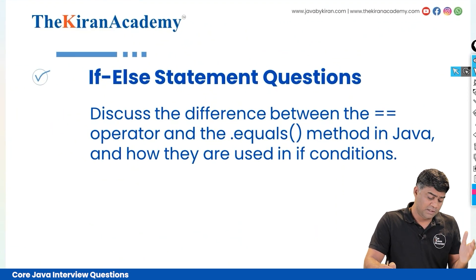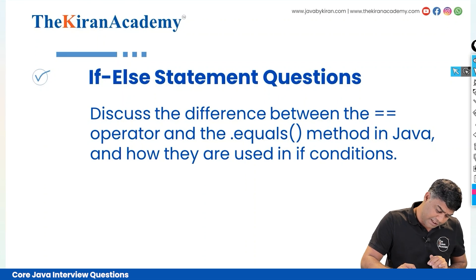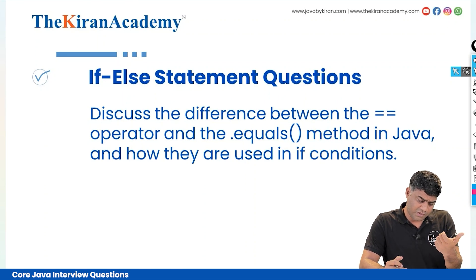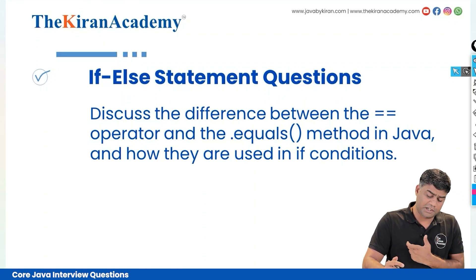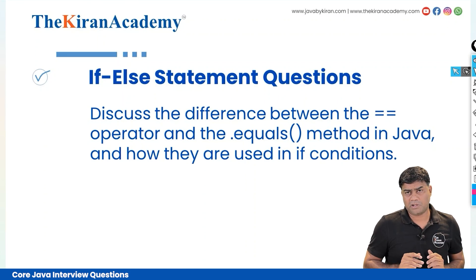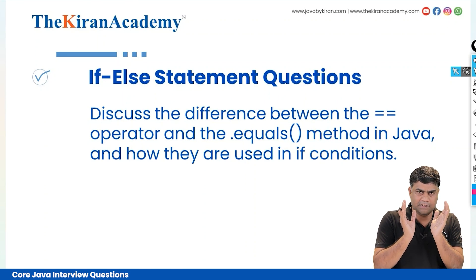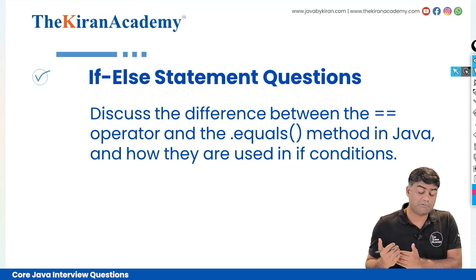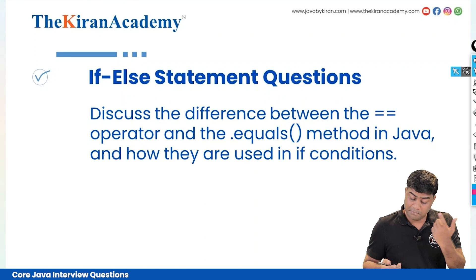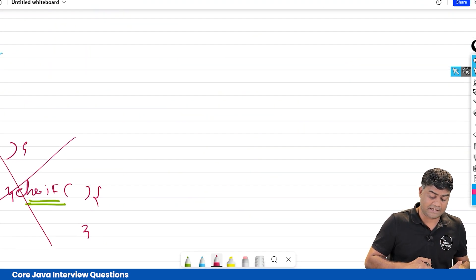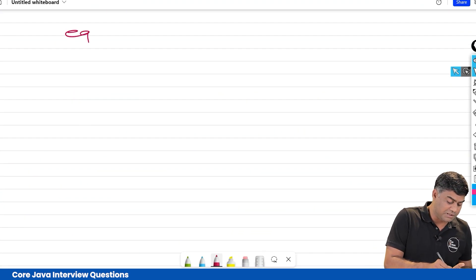This question is very important. Double equal to means it checks the address, it checks reference. But dot equals means it checks content of a string. But one more tricky thing is there. See, if someone asks you about equals method, then you can say content will get checked.